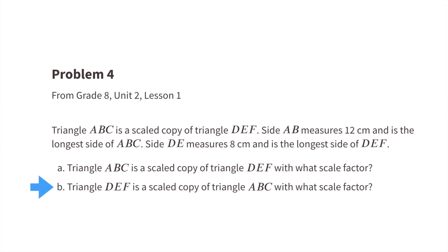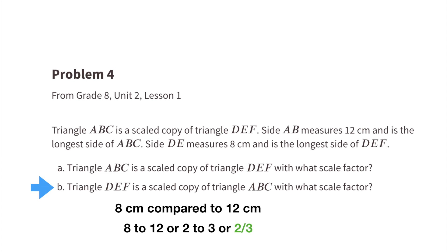Part b: Triangle DEF is a scaled copy of triangle ABC with what scale factor? 8 centimeters compared to 12 centimeters is an 8 to 12 ratio, which simplifies to 2 to 3, or 2 thirds. The scale factor would be 2 thirds.